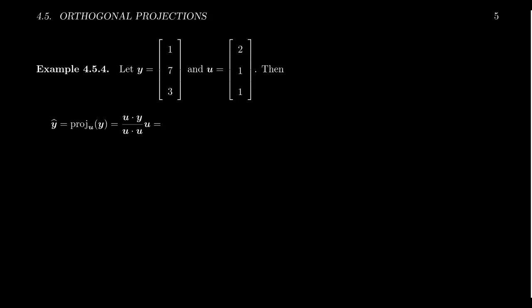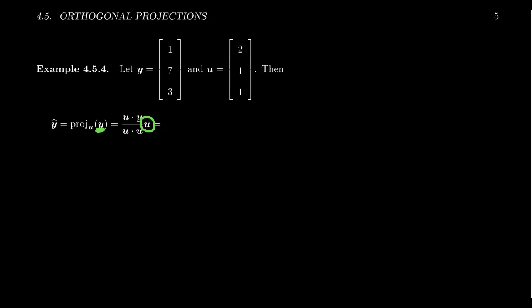Let's see a quick example. Take y = [1, 7, 3] and u = [2, 1, 1]. We want to compute the orthogonal projection of y onto u, which we call y-hat. Since there's just a single vector, the formula is the Fourier coefficient (u · y) / (u · u) times u. So the projection of y onto u will be a scalar multiple of u, pointing in the same direction as u.